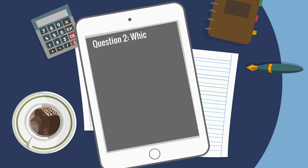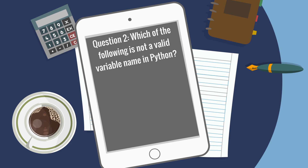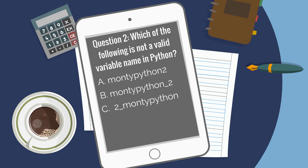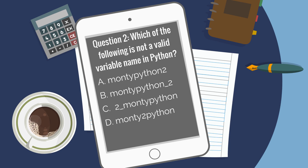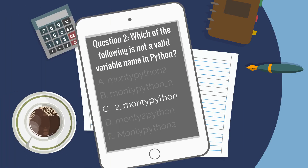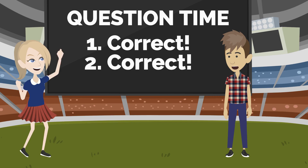Question two: which of the following is not a valid variable name in Python? A, Monty_Python_2. B, Monty_Python_underscore_2. C, 2_underscore_Monty_Python. D, Monty_2_Python. E, MMonty_Python_2. You had told me that a variable name cannot start with a number, so I would say the answer is C, 2_Monty_Python. That's right.